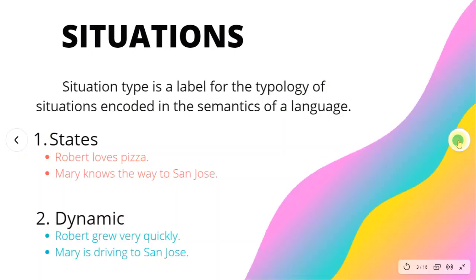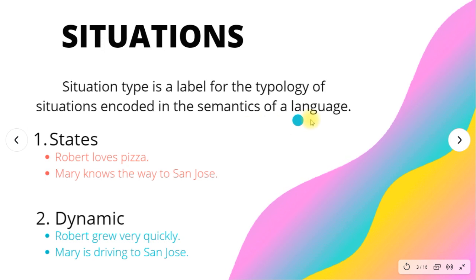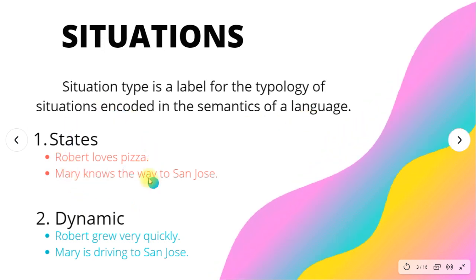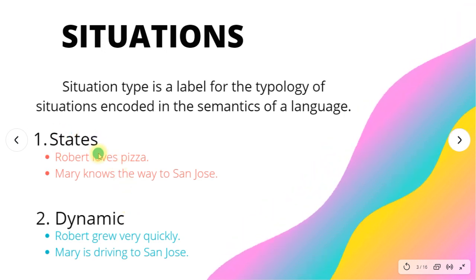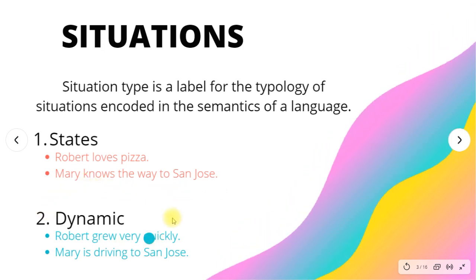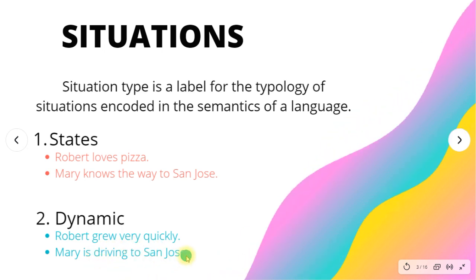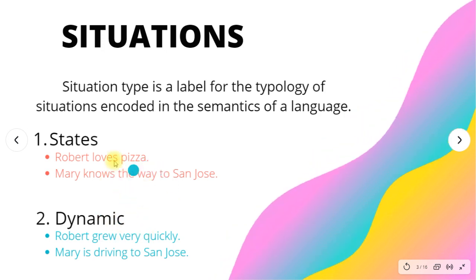First we need to know the situation type, which is a label for the topology of situations encoded in the semantics of a language. There are two kinds of situations. For states, we have sentences like 'Robert loves pizza' and 'Mary knows the way to San Jose.' For dynamic situations, we have 'Robert grew very quickly' and 'Mary is driving to San Jose.'